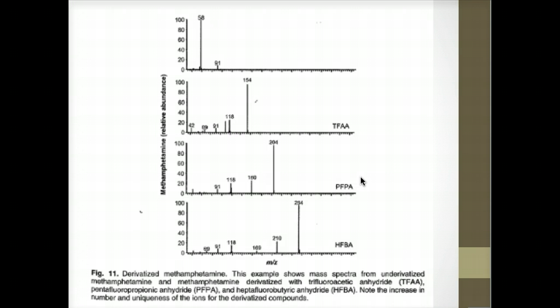Here is figure 11 from chapter 9. This is an example of a derivatized methamphetamine. Un-derivatized methamphetamine shows only a single prominent ion in the top panel. And as we go down and look at this, three different derivatives have been used to derivatize the methamphetamine. And you can see here what they are.